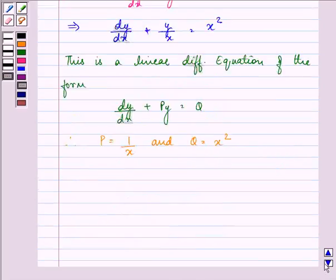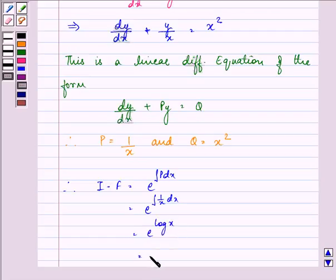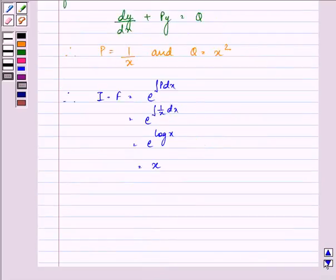Now what we need to do next is find out the integrating factor that is equal to e raised to the power integral p dx. That is e raised to the power p is 1 by x dx. That is e raised to the power log x. In turn, the value of integrating factor is coming out to be x.